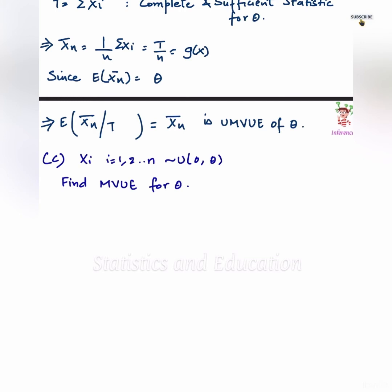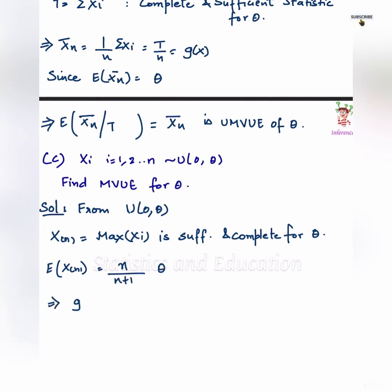Next question: Xi have been taken from uniform 0, theta and we have to find UMVUE for theta. We already know that X(n), that is maximum of Xi, is a sufficient and complete statistic. And expectation of X(n) equals n upon n plus 1 theta, which implies n plus 1 upon n times X(n) is an unbiased estimator of theta.